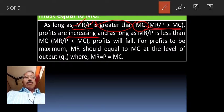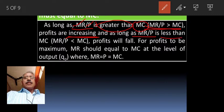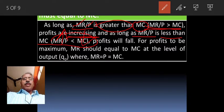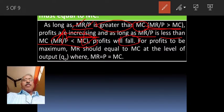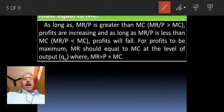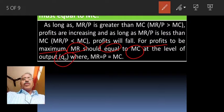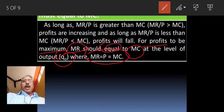But as long as marginal revenue and price is less than marginal cost, profits will fall. So, for profit to be maximum, marginal revenue should be equal to the marginal cost at the levels of output at Q0, where marginal revenue equals market price equals marginal cost.